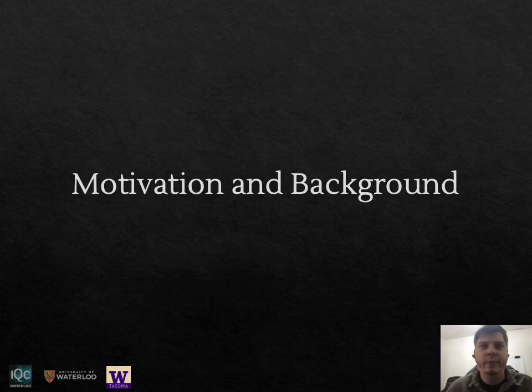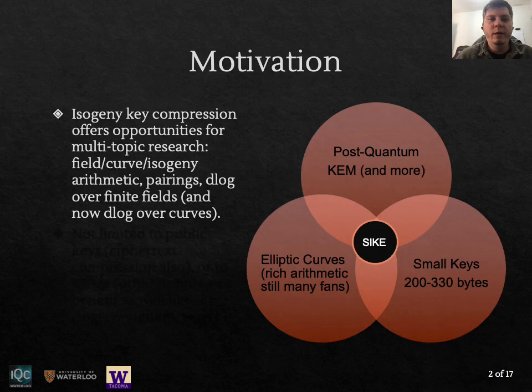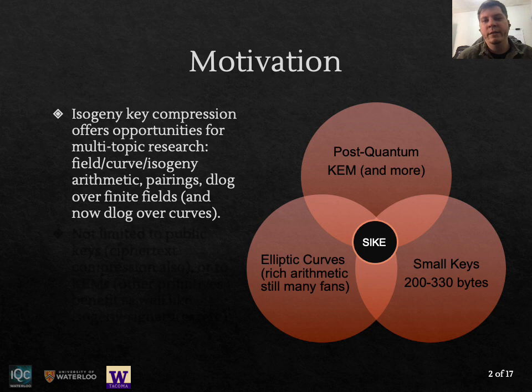Let's start with some motivation and background. It is well known that classical elliptic curves and pairings offer many opportunities to do research on different mathematical objects, from multi-precision arithmetic to finite field arithmetic and curve arithmetic. Now, isogenies that are believed to be post-quantum secure introduce the arithmetic of maps between curves, and key compression takes it to another level. It also includes discrete logarithms over finite fields to be used constructively, and now in this work we suggest to use discrete logarithms over elliptic curves.